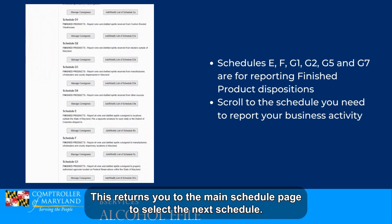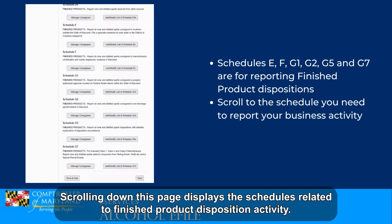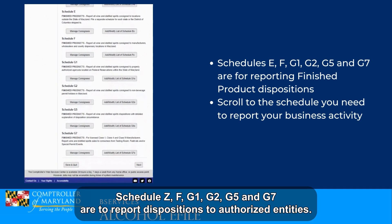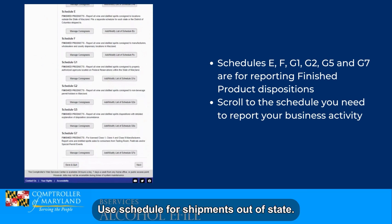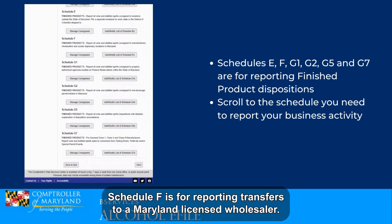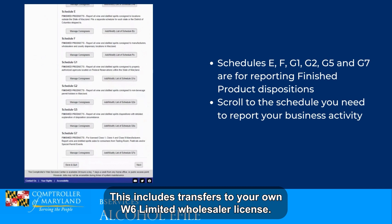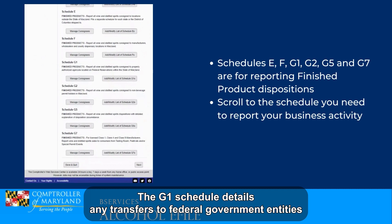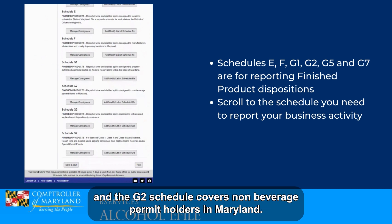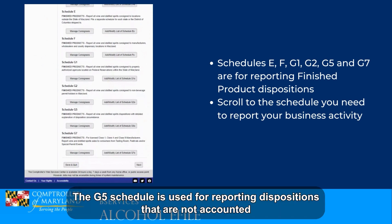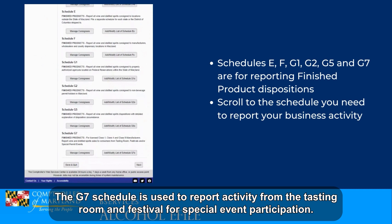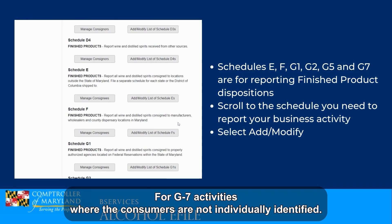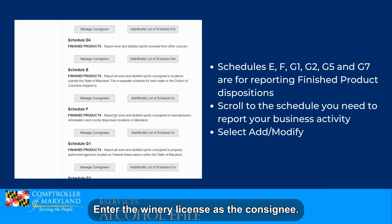This returns you to the main schedule page to select the next schedule. Scrolling down this page displays the schedules related to finished product disposition activity. Schedules E, F, G1, G2, G5, and G7 are used to report dispositions to authorized entities, and are separated by the type of entity receiving finished product from the licensee. Use Schedule E for shipments out of state. Schedule F is for reporting transfers to a Maryland licensed wholesaler, including transfers to your own W6 limited wholesaler license. The G1 schedule details transfers to federal government entities, and the G2 schedule covers non-beverage permit holders in Maryland. The G5 schedule is used for reporting dispositions not accounted for in the other disposition schedules. The G7 schedule is used to report activity from the tasting room and festival or special event participation. For G7 activities where consumers are not individually identified, enter the winery license as the consignee.